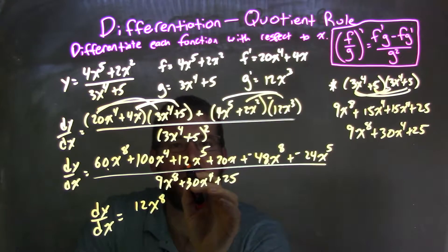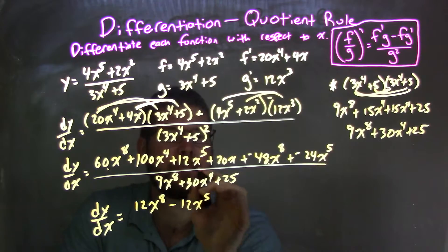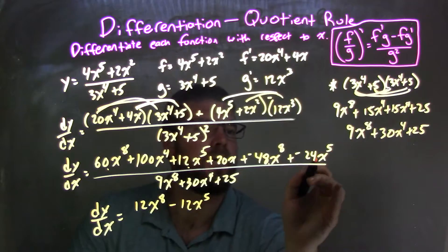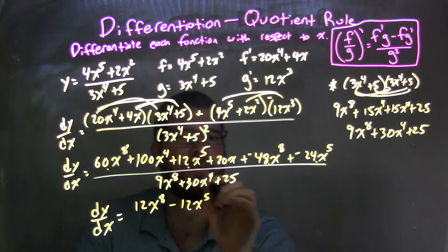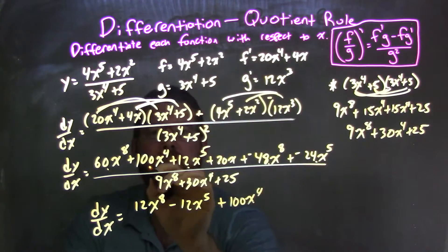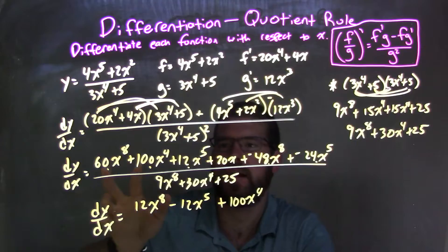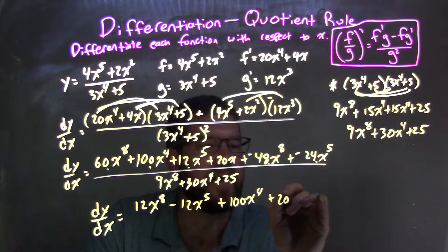Next, highest degree I see is the fifth power. 12x to the fifth minus 24x to the fifth is negative 12x to the fifth. Next, highest exponent I see is the fourth power. So we have plus 100x to the fourth right there. And do I see anything else? The last one is 20 just x plus 20x.